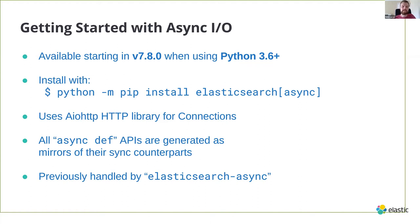Previously there was a library called Elasticsearch Async which handled this by sliding underneath the API layer, but it didn't play well with some new async IO technology — asyncio.run didn't work properly, and defining the Elasticsearch instance outside an async scope caused problems. This new implementation of asyncio works a lot better with all of those edge cases. So you should probably give it a try.